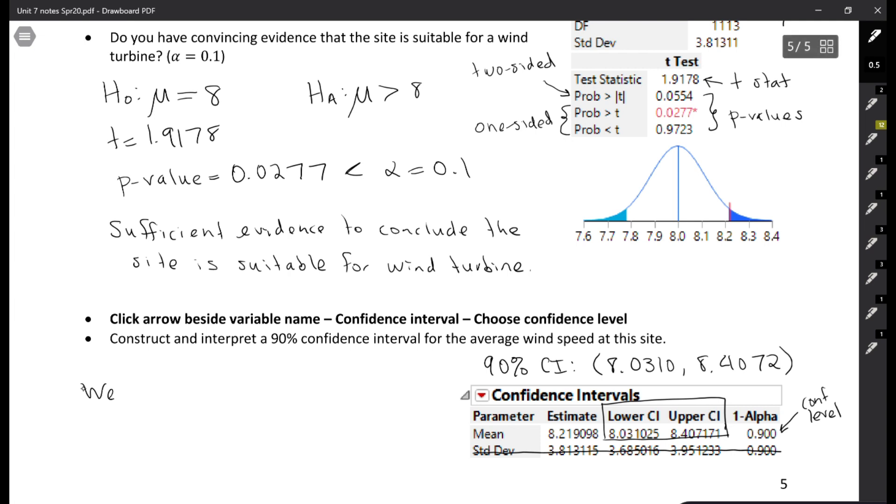If we were to interpret that, we are 90% confident that the true average wind speed at this site is between these values. We're trying to estimate a parameter, the true average wind speed at this site, and it's between 8.0316 and 8.4072. We're estimating that that's where the parameter is.